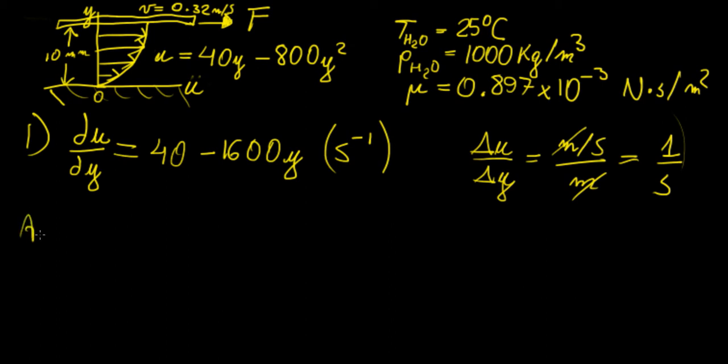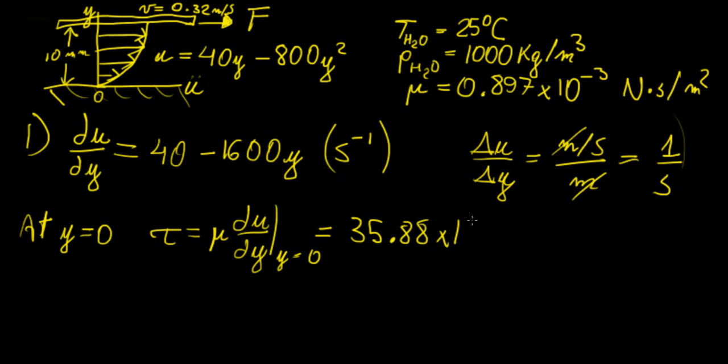At y equals 0, we're going to have the following shear stress: mu times du over dy at y equals 0. If we plug in all those values, we're going to get the following shear stress, so that's going to be 35.88 times 10 to the power of minus 3 pascals. So very small shear stress here.